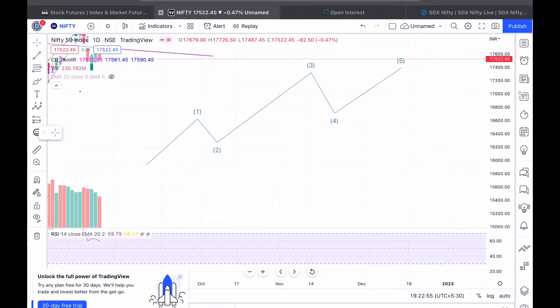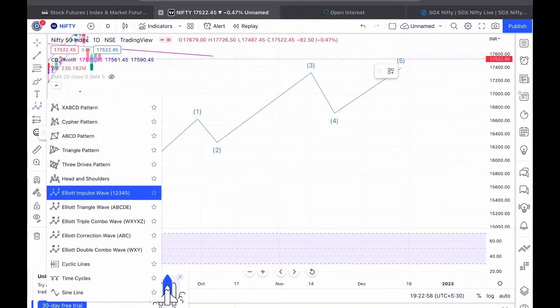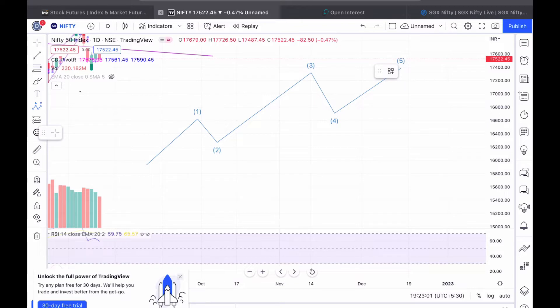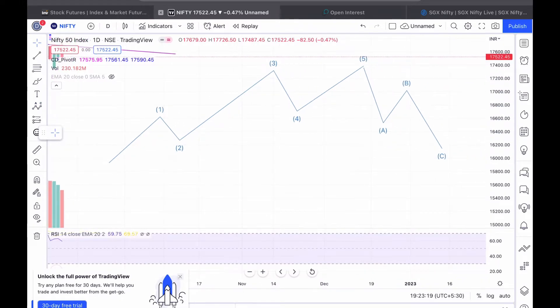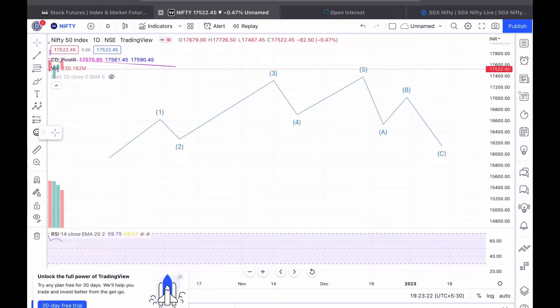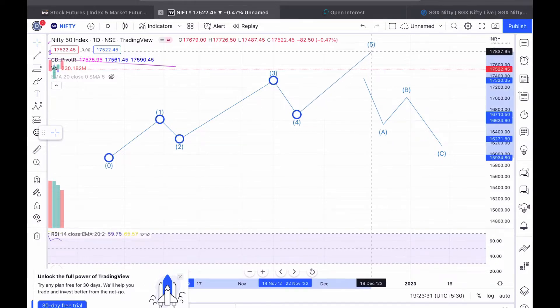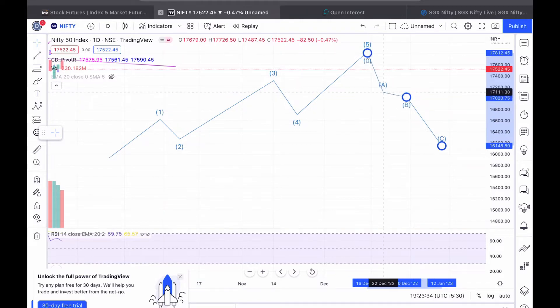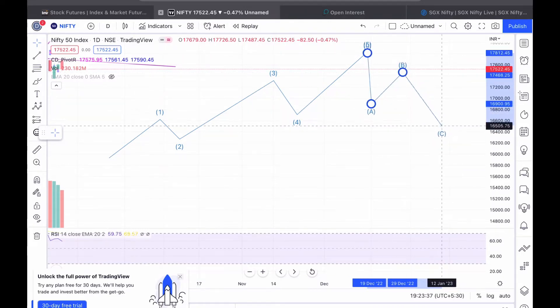So this is the basic of a wave structure, and then we have corrective waves after this. So this one-two-three-four-five is called impulse wave, and post that we have corrective waves. After this starts the corrective wave: the first wave down is called A, then it goes up to a certain point B, and then it comes down C. So this is how corrective waves work. This is the basic structure of a rally in bull markets, what we call.